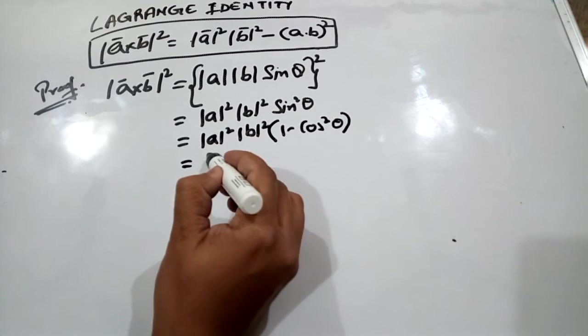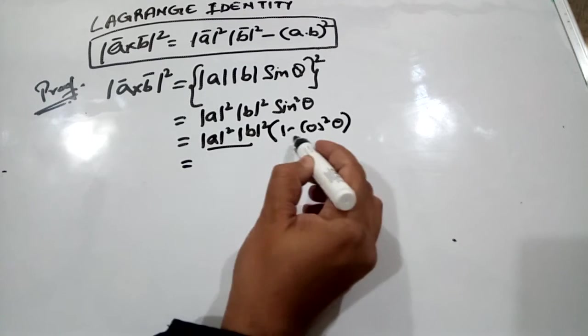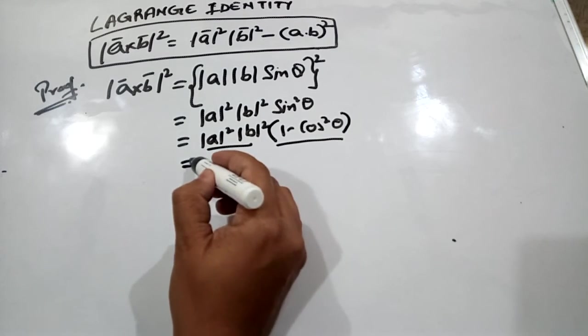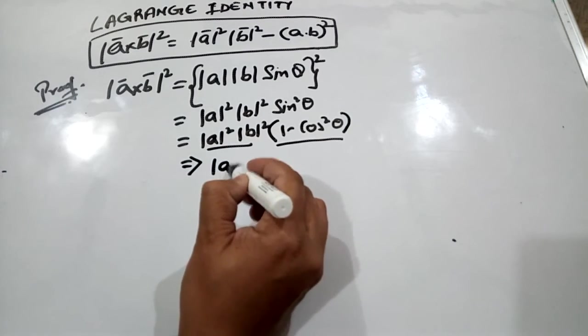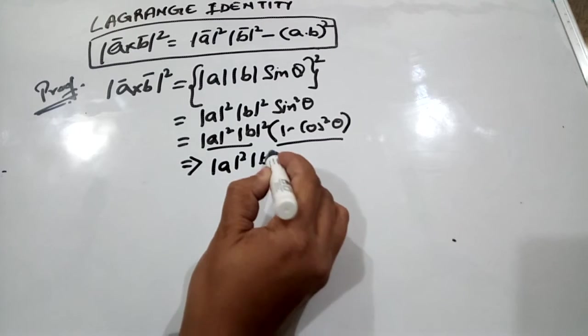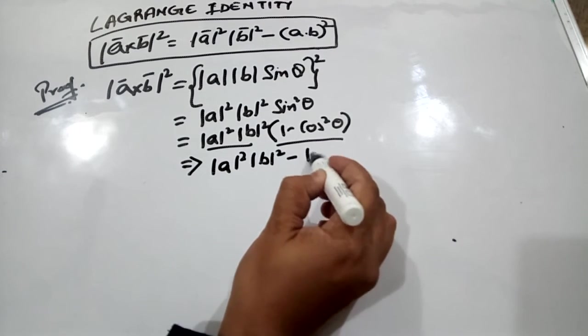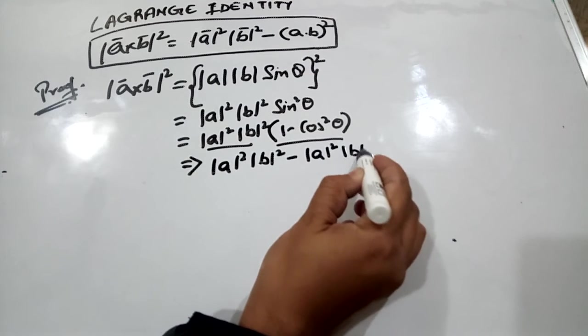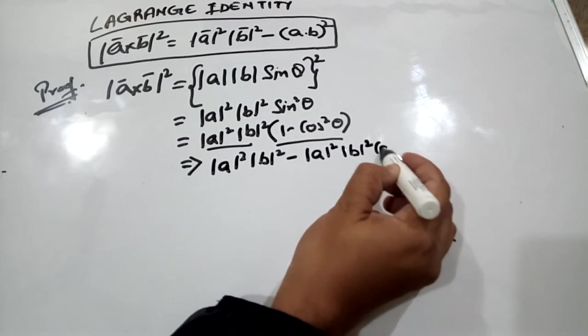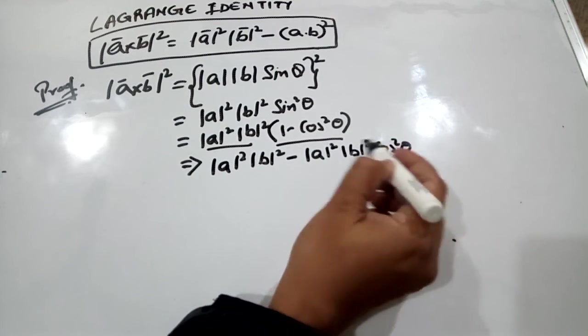Further we multiply this with this bracket, so this will give us mod of a square mod of b square minus mod of a square mod of b square cos square theta.